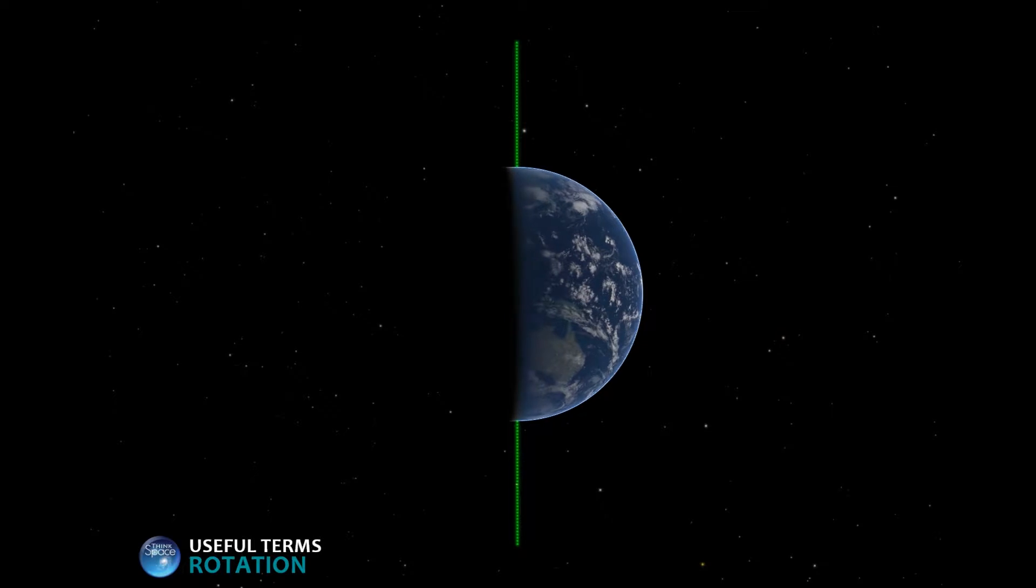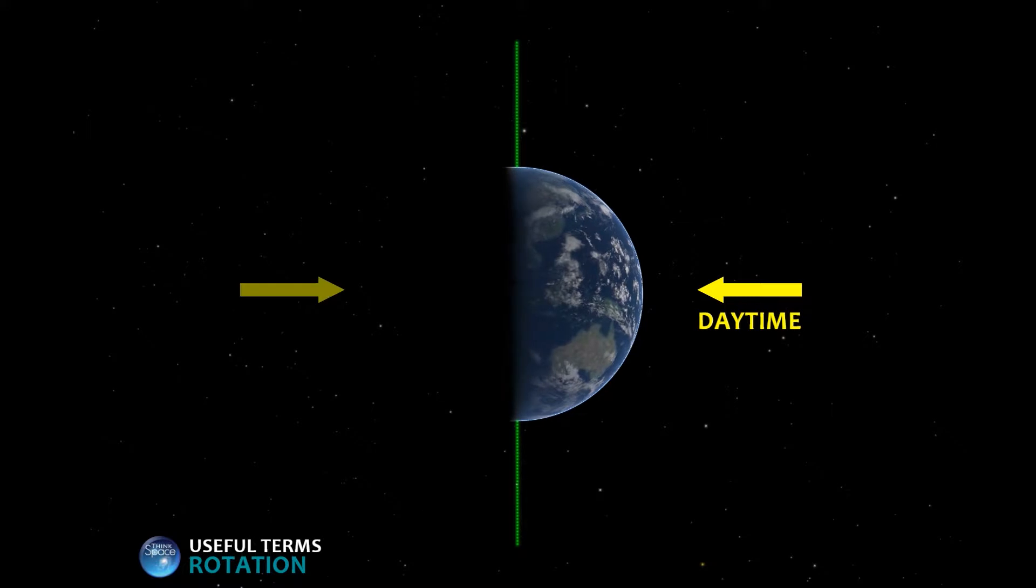The portion of the Earth to the right faces the Sun and experiences daytime. The portion of the Earth to the left is in darkness and experiences nighttime.